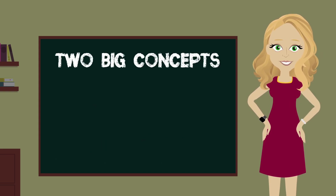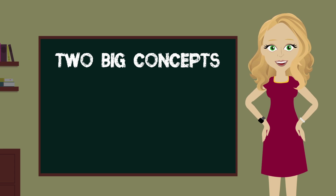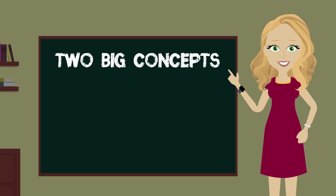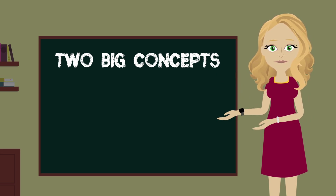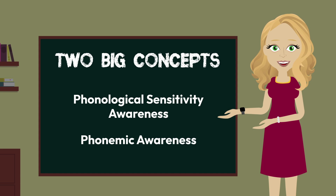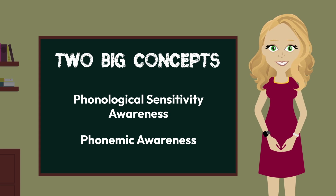There were really only two big concepts to review in this stop and jot, but they were loaded — lots of information related to the auditory skills involved in the two subsets of phonological awareness: phonological sensitivity awareness and phonemic awareness. Before moving on, be sure to take a moment to think about these big ideas and how they might relate to your classroom instruction.